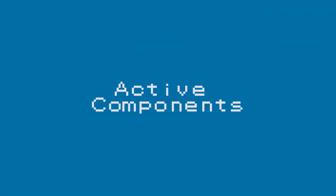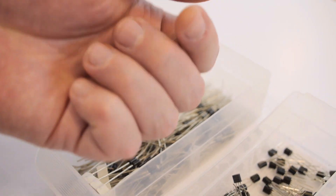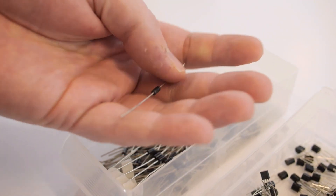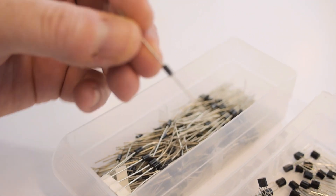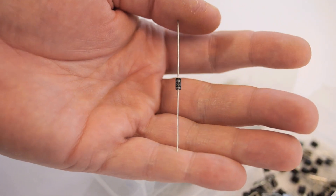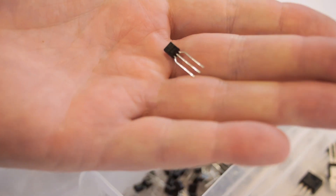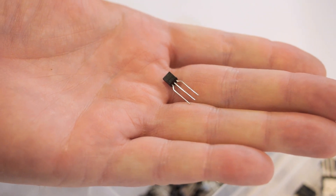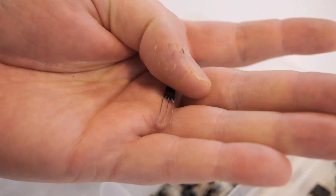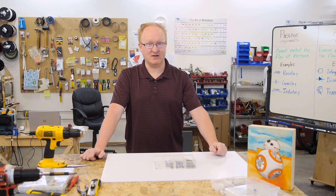Active components are things that can control the flow of electrons in a circuit. Examples include diodes — sometimes considered passive, but I would consider them active because current can go in one direction but not the other, so there's a kind of decision-making going on. Of course, transistors are the building block of all modern electronics — this is electricity controlling electricity. They used to do that with big clunky electromechanical relays; now it's done with circuitry. It's because of the transistor that I'm able to talk into this camera today.